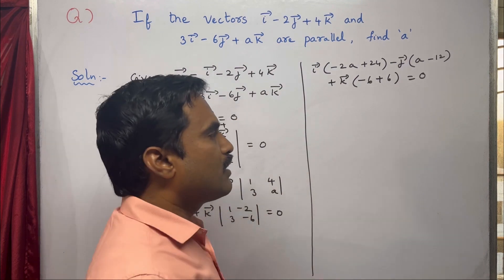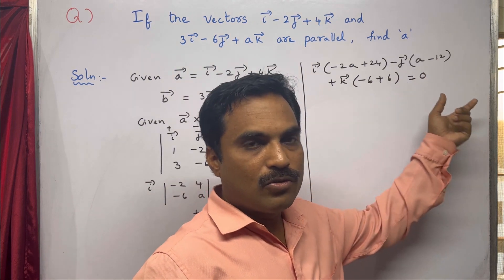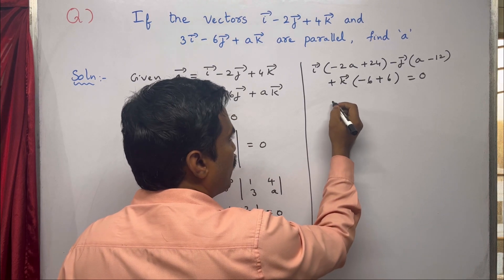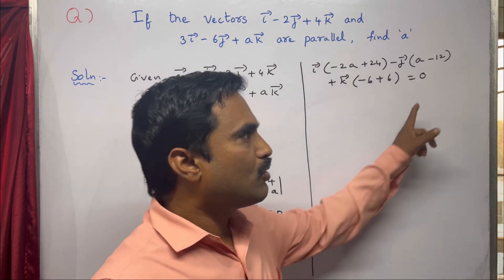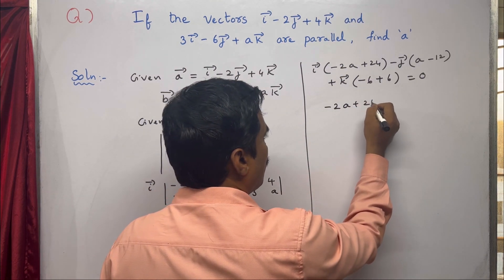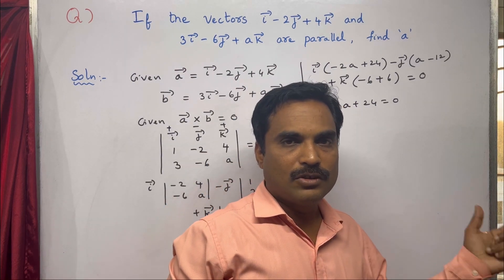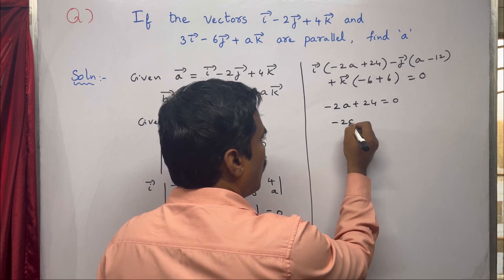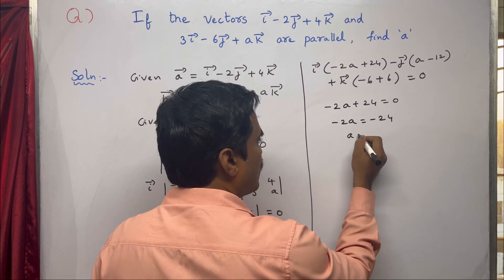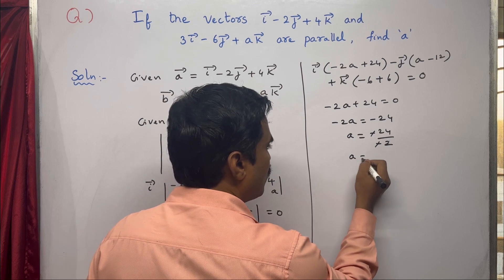Since the right-hand side is 0, equate each coefficient of i̅, j̅, and k̅ to 0. Equating the coefficient of i̅ to 0: minus 2a plus 24 equals 0. Taking 24 to the other side gives minus 2a equals minus 24, so a equals minus 24 divided by minus 2, which gives a equal to 12.